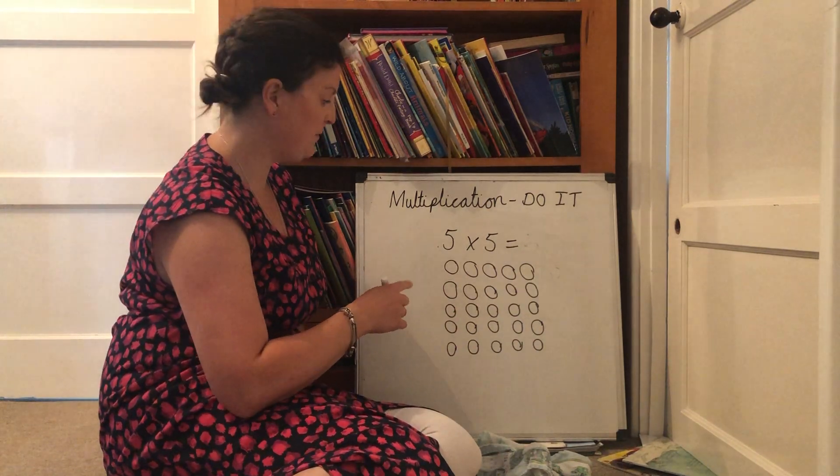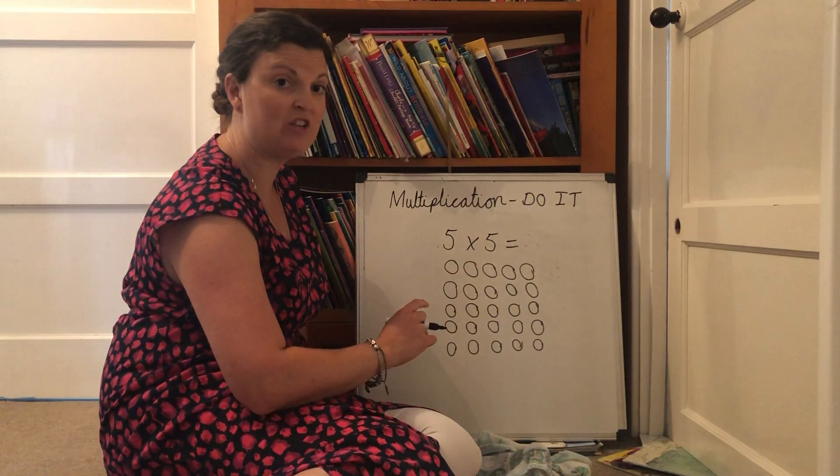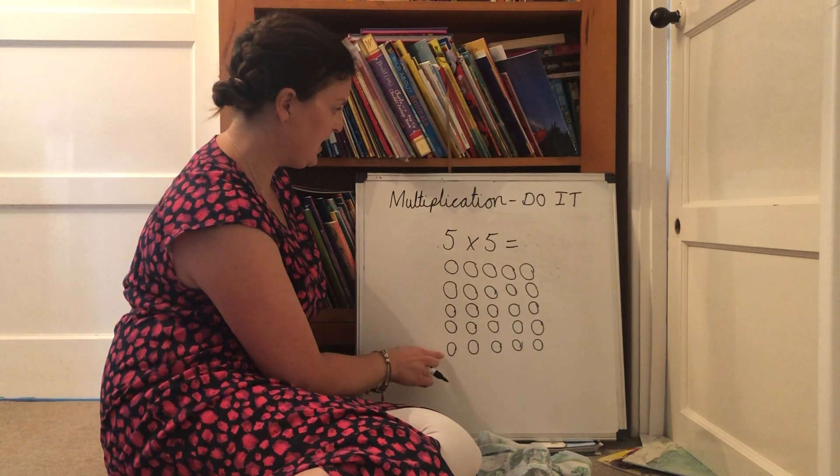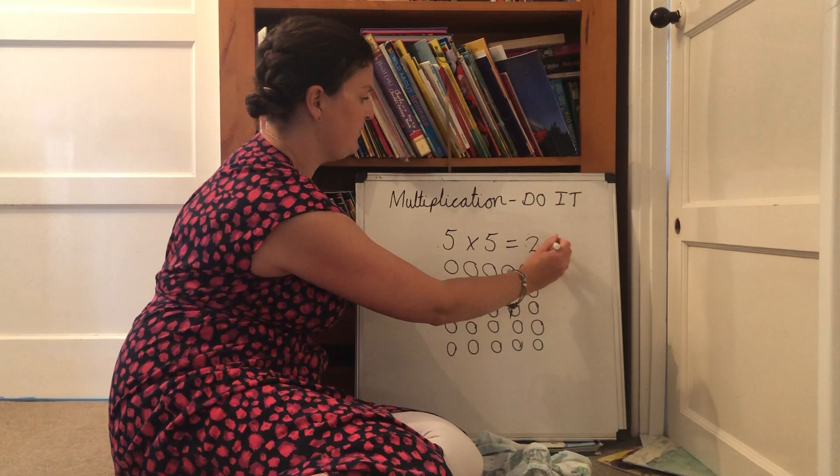I can count these one at a time. But as I know that they're arranged in groups of five, I can say five, ten, fifteen, twenty, twenty-five. The answer is twenty-five.